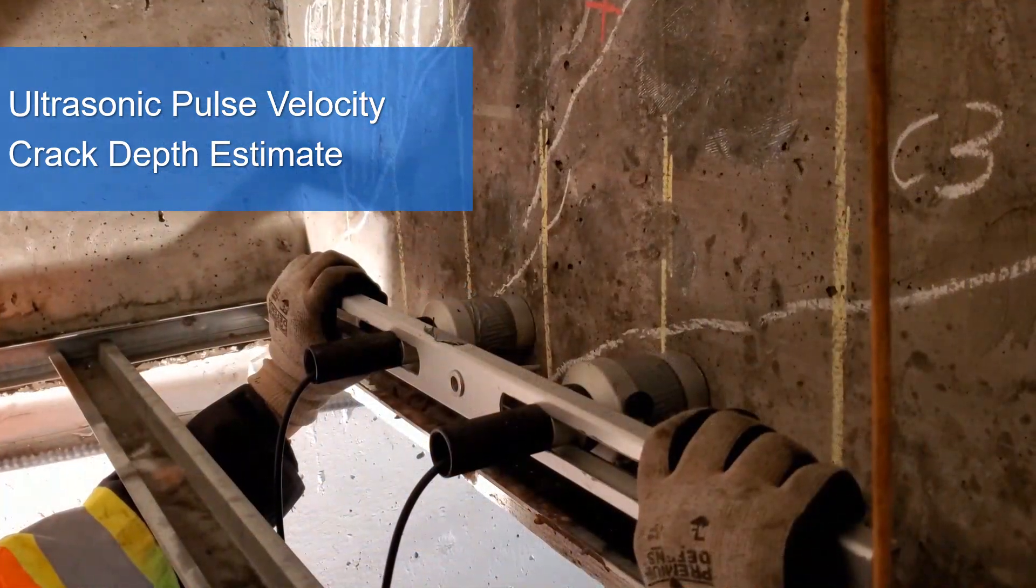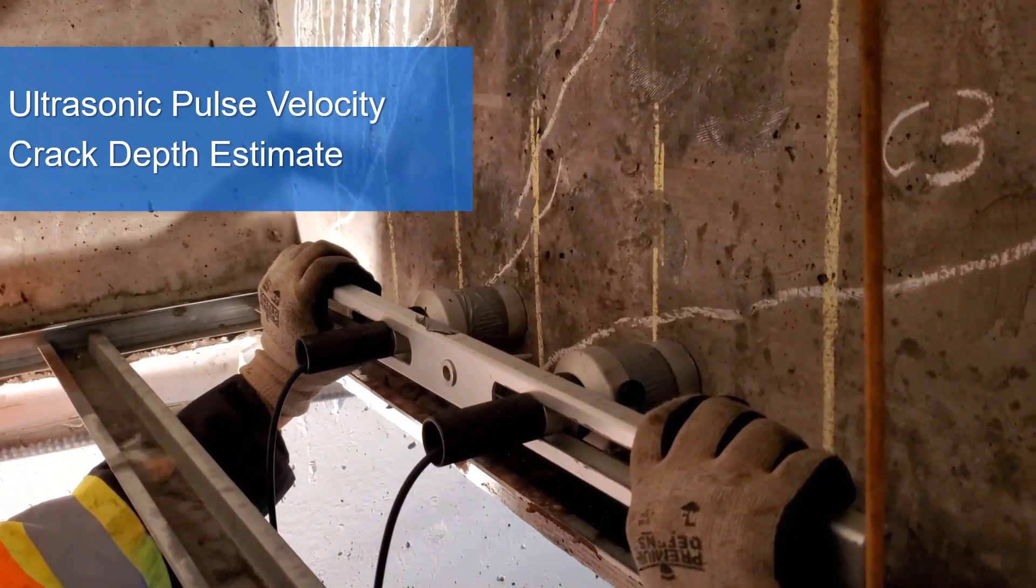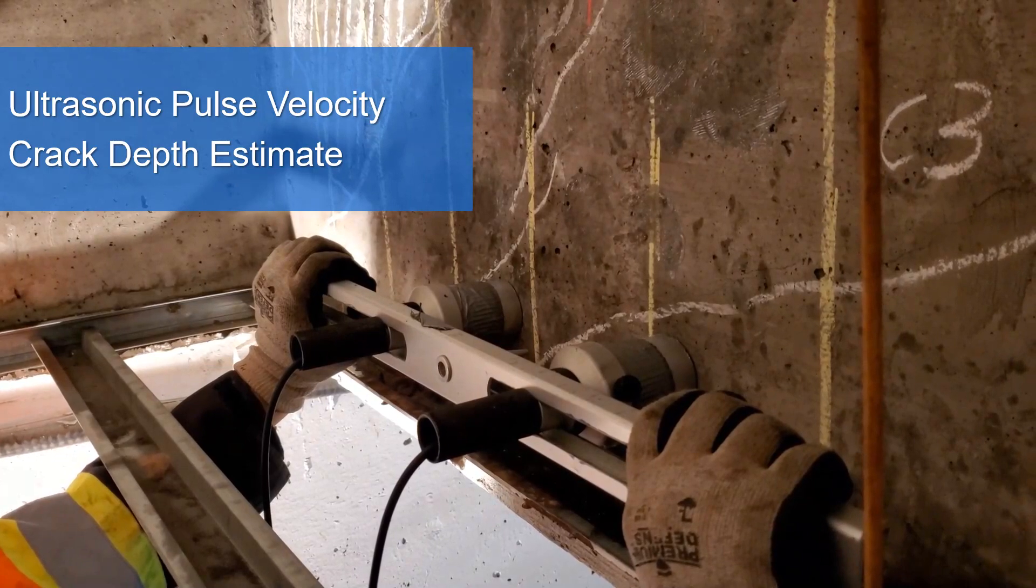In this particular application, the sending transducer is placed on one side of the crack while the receiving transducer is placed on the other side. First, the sensors are placed at a distance d and the transit time between the two sensors are measured.